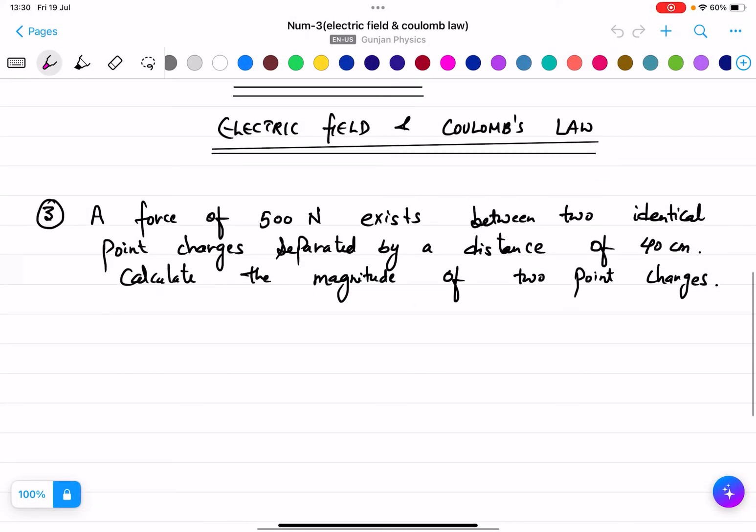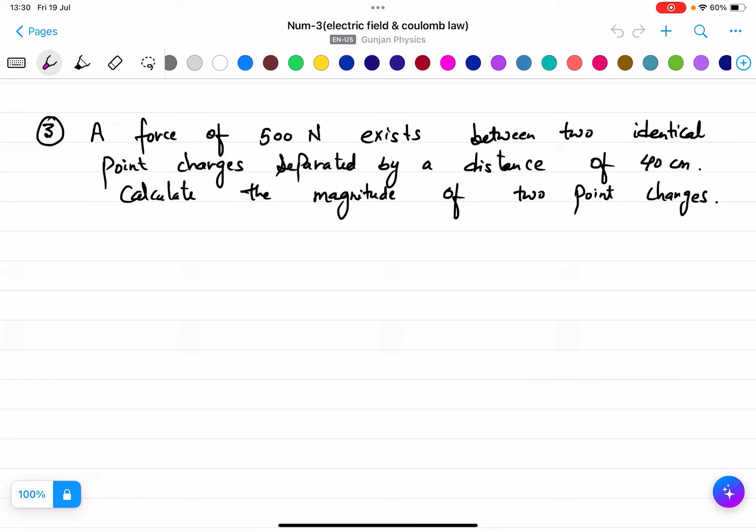Okay, now numerical number three, which is also based on electric field and Coulomb's law. The question says that a force of 500 newtons exists between two identical point charges separated by a distance.